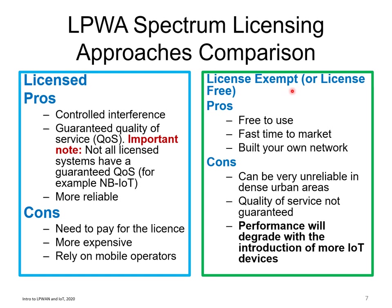For the unlicensed or license-exempt approach, the advantage is free to use — similar to Wi-Fi — enabling faster time to market, as users can simply buy and deploy devices and build their own network. The cons are that it can be unreliable in dense areas due to high interference, quality of service cannot be guaranteed since you don't have exclusive spectrum access, and performance may degrade over time. As more IoT devices join, interference may increase. Most IoT applications in Australia currently operate in the ISM band of 915 to 928 MHz.